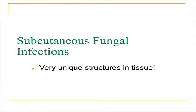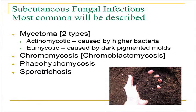We start with the subcutaneous fungal infections. These infections can be difficult to remember — all the unique structures, the organisms can be difficult to identify, but they certainly supply some very valuable learning opportunities. The four we see most commonly are mycetoma, in which there are two types — actinomycotic and eumycotic — then chromomycosis, sometimes also known as chromoblastomycosis, phaeohyphomycosis, and sporotrichosis.